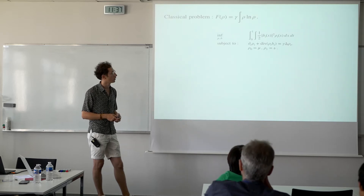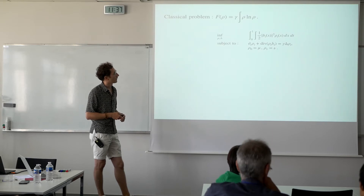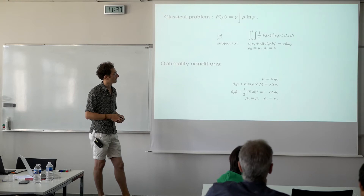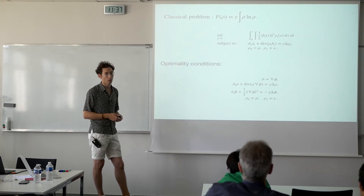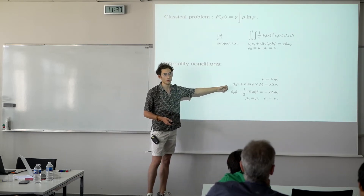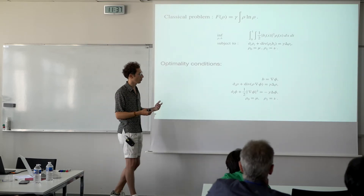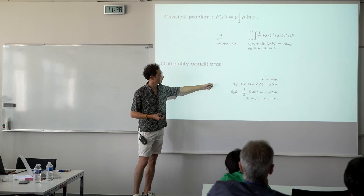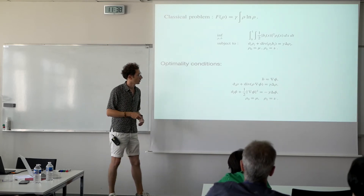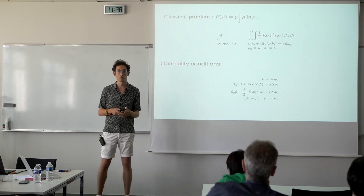Let me dive into the classical Schrödinger problem. The first thing you can do is write the optimality conditions. Your control B is a gradient at the optimum — not surprising in the context of optimal transport. The two equations you obtain are: first, a Fokker-Planck equation; and second, a Hamilton-Jacobi-Bellman equation. This system is complicated for a couple of reasons: it's a boundary-type problem, and you have a coupled nonlinear system of PDEs.